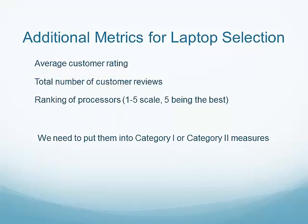We need to group them into either Category 1 or Category 2 measures. In this particular case, we say that we would prefer a laptop with a higher average customer rating, a laptop with a higher total number of customer reviews, and a laptop with a higher ranking of the processes. Therefore, we put them into Category 2 measures.